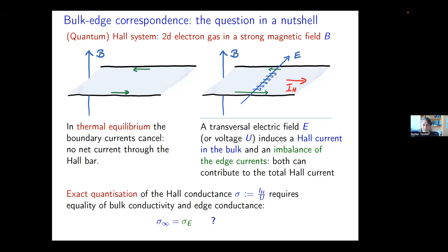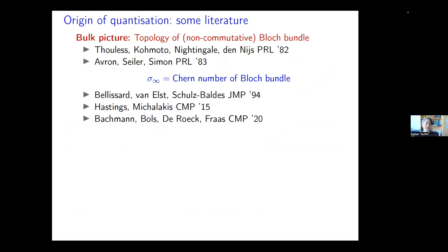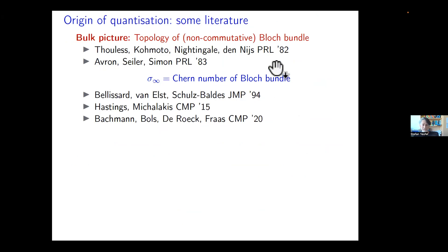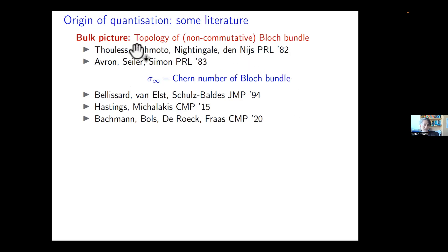There has been a lot of work in mathematical physics concerning the bulk Hall conductivity and its quantization, understood in terms of the topology of the Bloch bundle. In periodic systems, the Hall conductivity at zero temperature at certain magnetic fields is the Chern number of a certain vector bundle, and thus an integer. This was observed by Thouless and co-workers and earned the Nobel Prize in 2016.